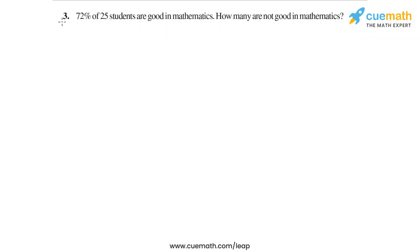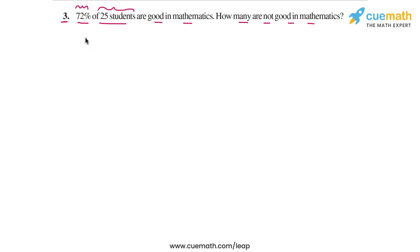The problem statement in question 3 says: 72% of 25 students are good in mathematics — how many are not good in mathematics? We have a total of 25 students, of these 72% are good in mathematics, and we have to find out how many are not good in mathematics. Let's solve this step by step.